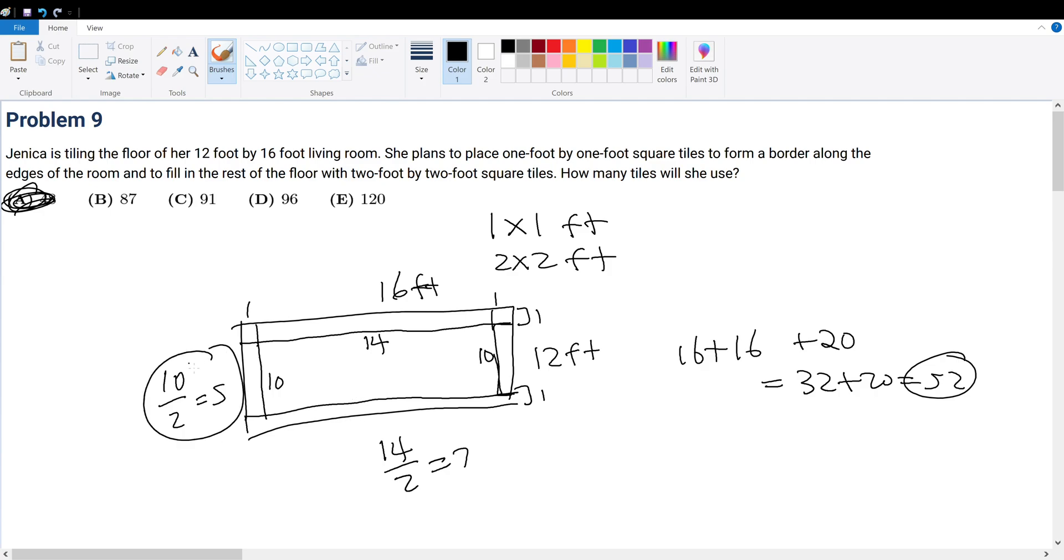So in other words, I need 5 columns. No, I need 5 rows of 2 foot columns. I need 7 columns. 5 rows and 7 columns would give us 35 total square tiles needed to fill the interior. So that's 35 plus 52. That gives us 87. So that brings us to answer choice B.